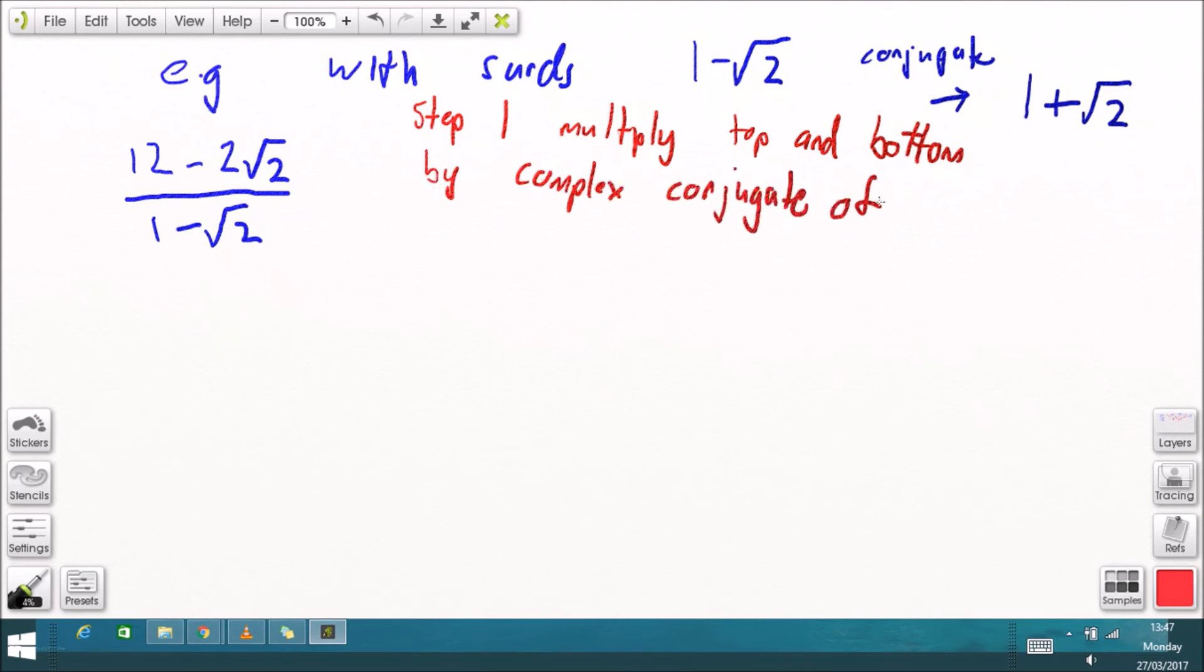so if I have an expression as a fraction like this that I want to simplify the first thing you must do is multiply the top and the bottom by the conjugate, not the complex conjugate just the conjugate, it's not a complex number, of the denominator so the denominator is one minus root two, I'm going to multiply the top and the bottom by one plus root two